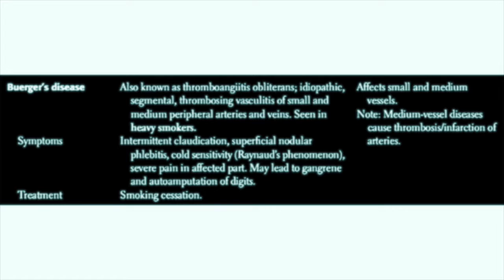Buerger's affects small and medium-sized vessels, and the medium vessel disease causes thrombosis and infarction of arteries. The symptoms of Buerger's disease include intermittent claudication, superficial nodular phlebitis, cold sensitivity — that is, Raynaud's phenomenon — and severe pain in the affected part. Buerger's disease may also lead to gangrene and digit auto-amputation, and the treatment is simply to stop smoking.